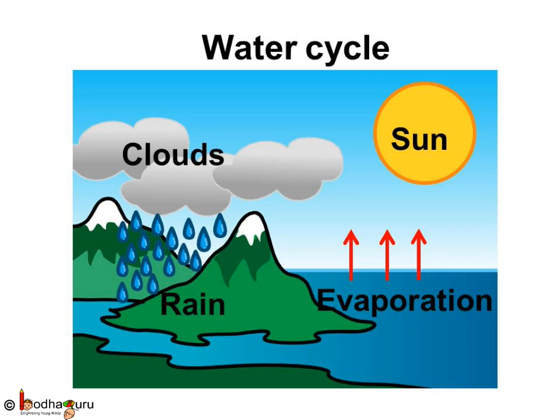That was the tireless journey which water continues to make endlessly. This is called the water cycle. The water cycle is the journey water takes as it circulates from the land to the sky and back again to the land.